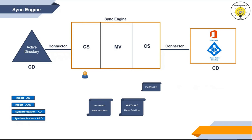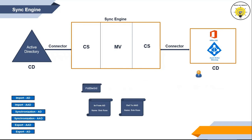Synchronization rules will be discussed in detail in another session. The next Sync Cycle is Export Azure Active Directory or Export AAD. During this cycle, changes presented within Metaverse are exported to Azure Active Directory or Office 365. The sixth Sync Cycle is Export AD or Export Active Directory. During this cycle, any changes picked during the import cycle from Azure Active Directory are exported to on-premise Active Directory. This is how Azure AD Connect synchronizes changes from Active Directory to Azure Active Directory, or from Azure Active Directory to on-premise Active Directory.